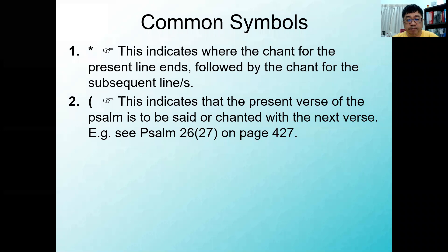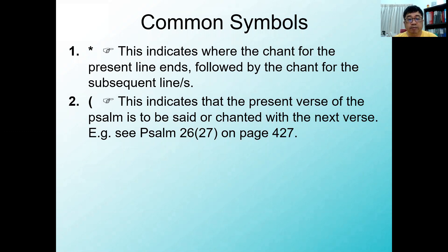To look at the symbols, let us look at some of the key elements that we need to be aware of. The first one is an asterisk. We will take psalm 26 as an example, which we are going to use for this lesson.